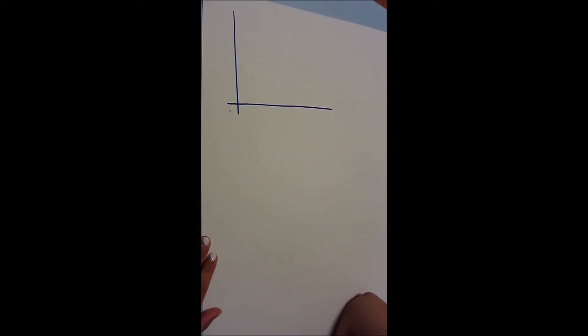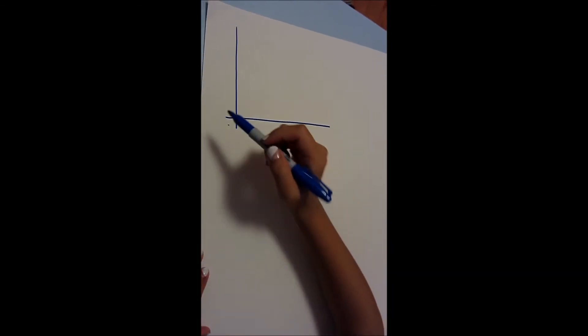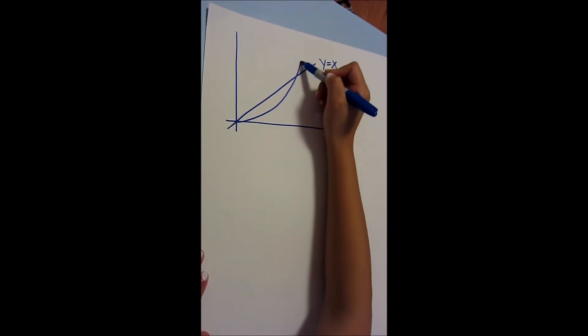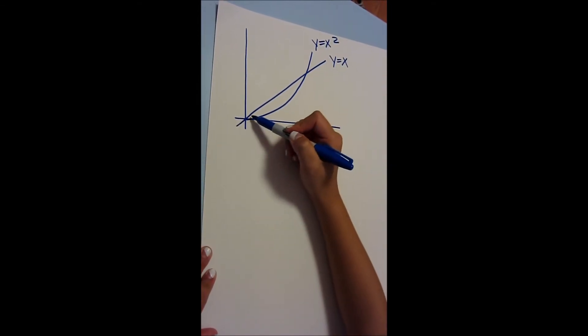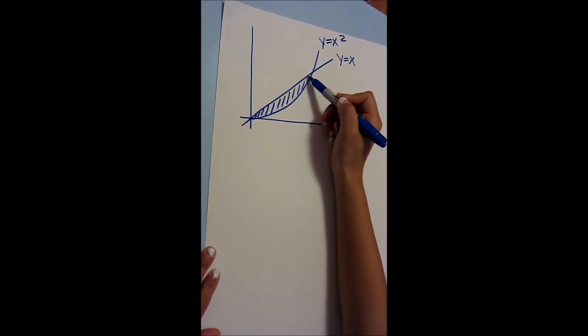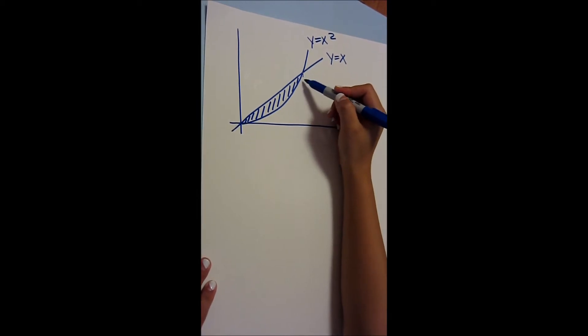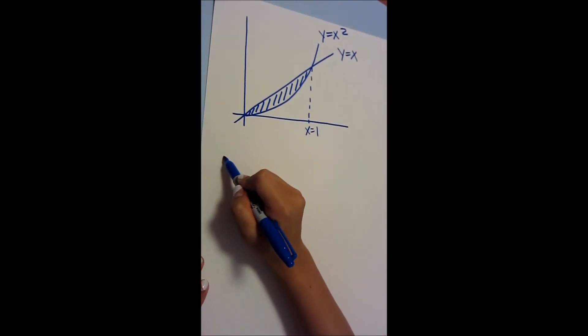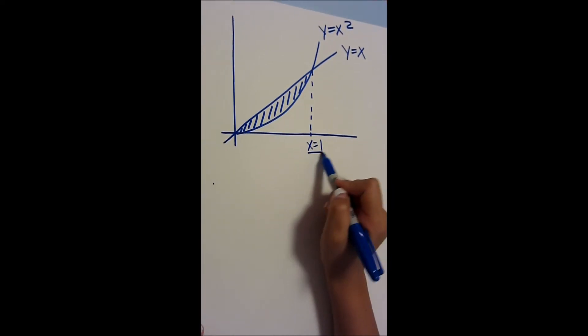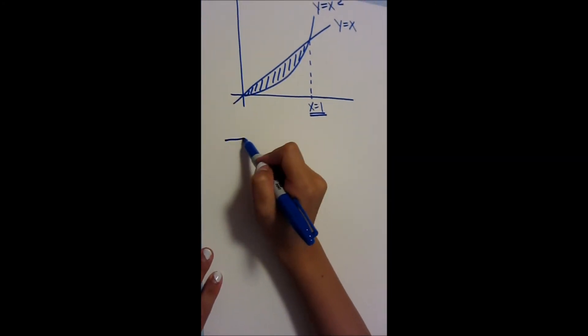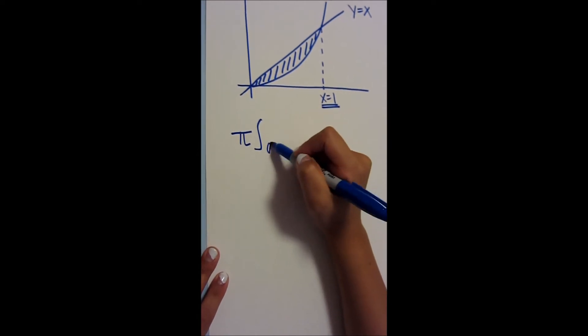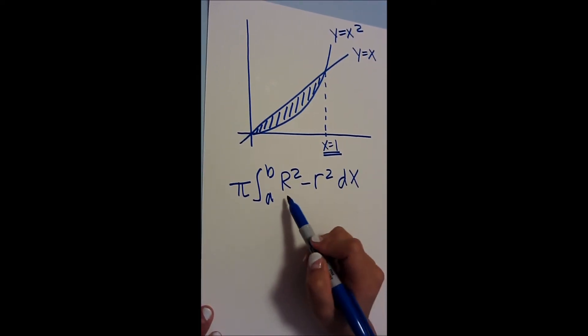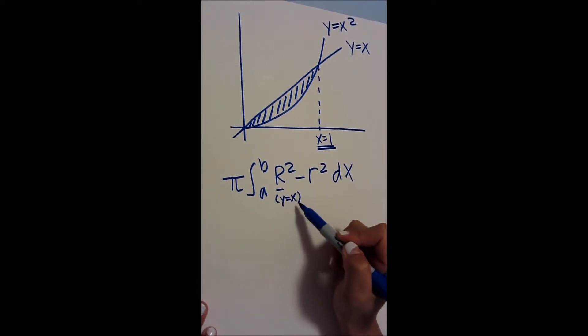Let's take another example involving two functions. So take, for example, y equals x and y equals x squared. There is an area enclosed by these two functions. What is the volume when this area is rotated around the x-axis? Well, the method is the same as before. First, you have to find the intersection, which is when x equals 1. So now you use the same formula: pi integral from a to b, big R squared minus little r squared dx. In this case, the big R is y equals x because it's on the top.